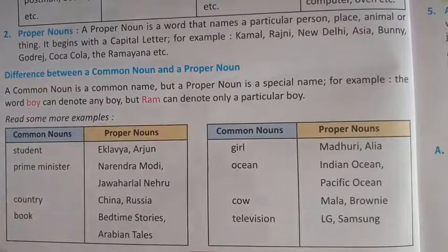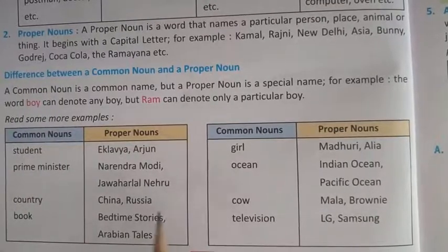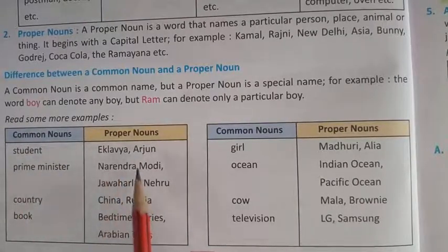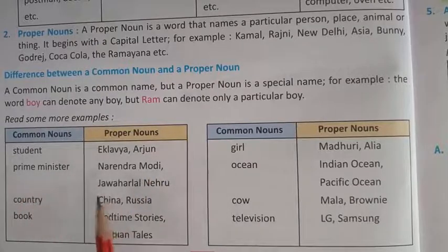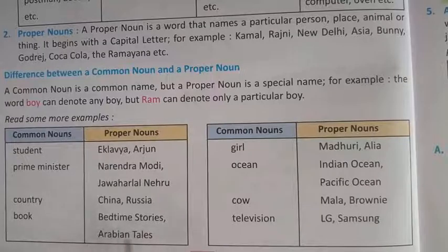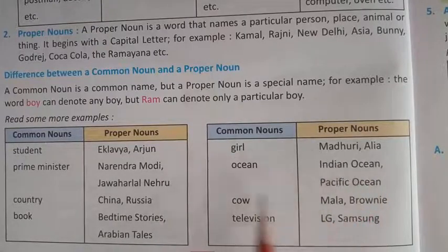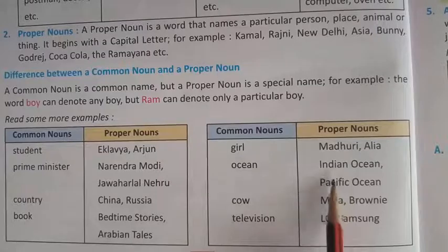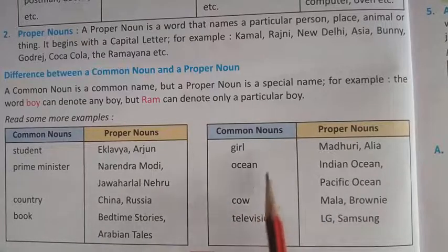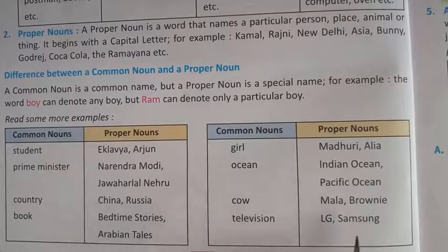इस table से आपको common noun और proper noun में आसानी से समझ आएगा. जैसे: Common noun — student; Proper noun — Eklavya, Arjun. Common noun — prime minister; Proper noun — Narendra Modi, Jawaharlal Nehru. Common noun — country; Proper noun — China, Russia. Common noun — book; Proper noun — Bedtime Story, Arabian Tales. Common noun — girl; Proper noun — Madhuri, Aliyah. Common noun — ocean; Proper noun — Indian Ocean, Pacific Ocean. Common noun — cow; Proper noun — Mala, Brownie. Common noun — television; Proper noun — LG, Samsung.